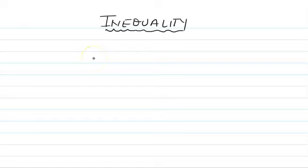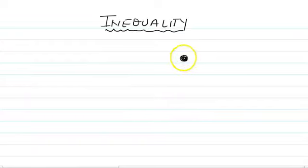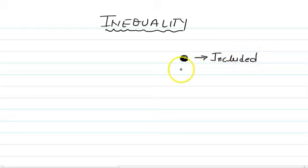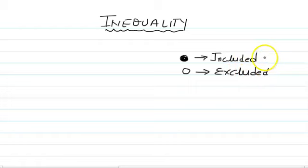In today's lesson, we are learning about inequality. Inequality means you are representing numbers on the number line. There are two ways you can represent a number on the number line. First one: we can make a dark circle, which means this point is included. And when we make a white circle, that is excluded. This is the basic difference between included and excluded.